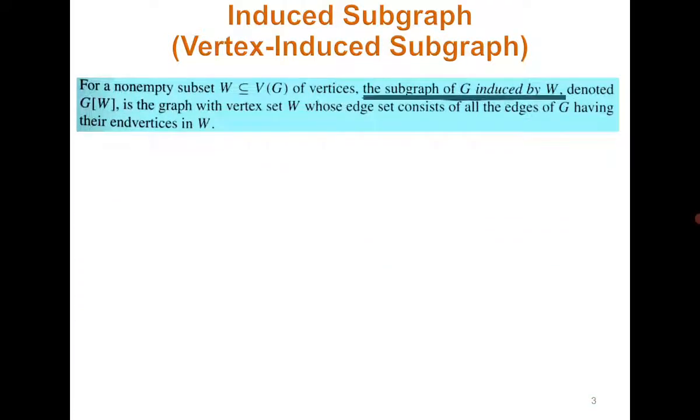Next is vertex-induced subgraph, sometimes called simply an induced subgraph. For a non-empty subset W of vertices, the subgraph induced by W is the graph with vertex set W whose edge set consists of all the edges of G having their end vertices in G.